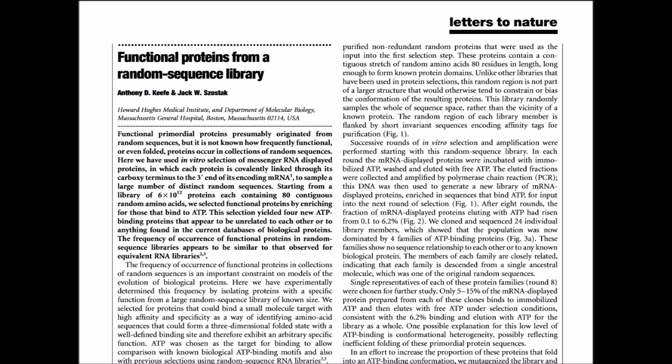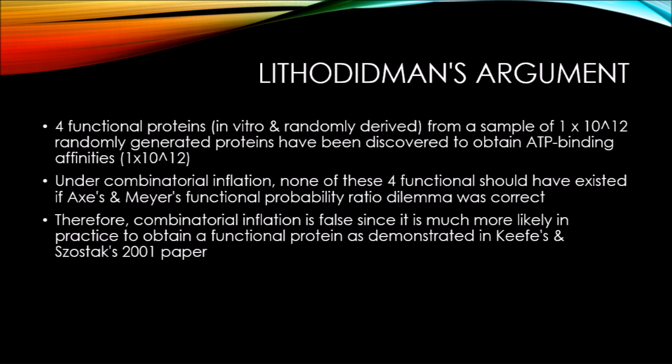As you can see, Lithodidman rejected the combinatorial inflation problem by citing a 2001 paper by Keefe and Szostak entitled 'Functional Proteins from a Random Sequence Library.' He uses this paper as a counterargument, implying that four randomly generated synthetic proteins were discovered to have ATP binding affinities from a sample of 10 to the power of 12 possible purified non-redundant combinations. He relies on this to argue a probability of 1 in 10 to the 11th of creating a functional ATP binding protein, as opposed to the extreme estimates put forth by Douglas Axe in Steven Meyer's book Darwin's Doubt.